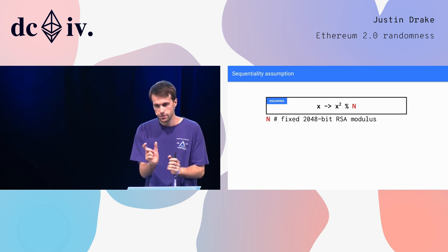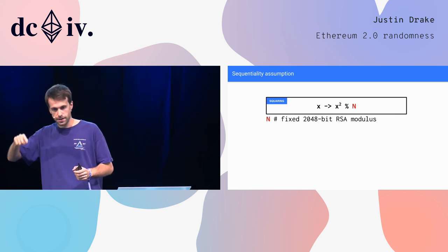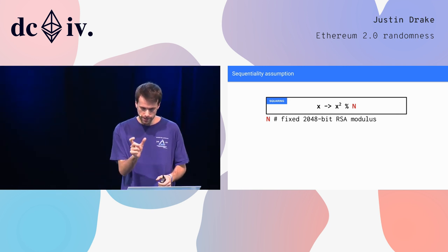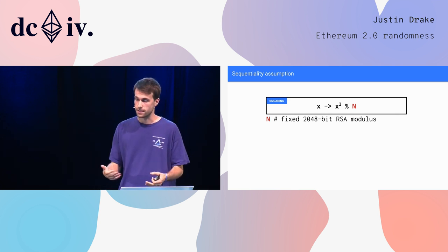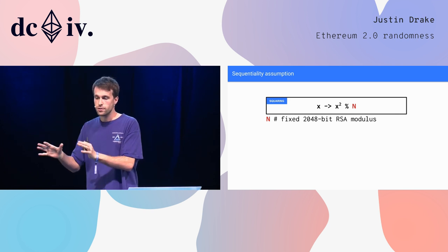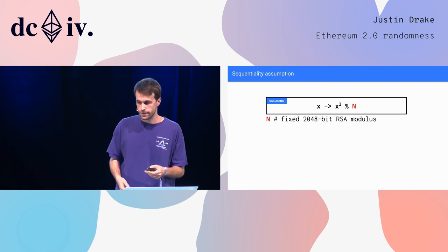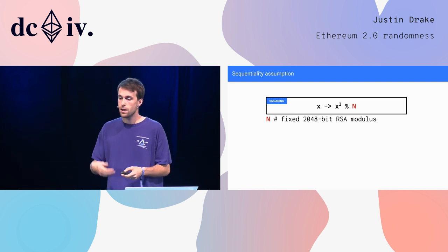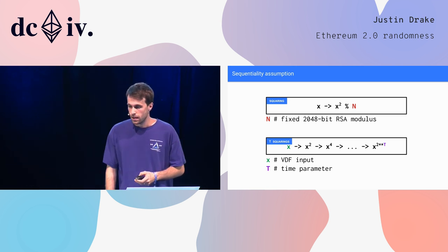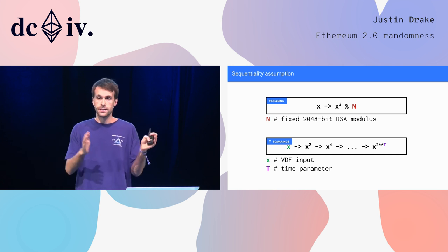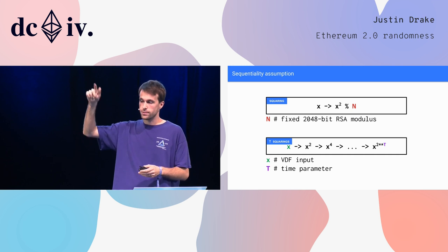Now let's look at how we actually instantiate a VDF. VDFs tend to be built with a basic building block — a round — which you keep iterating many, many times. The basic building block we have is the squaring function: you take a number, multiply it by itself, and reduce modulo n, where n is an unfactorizable RSA modulus that no one knows the factorization of. You do t squarings, where t is your time parameter, and the output is x to the 2 to the t.